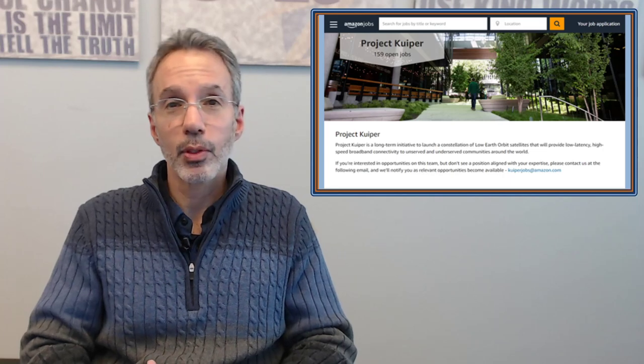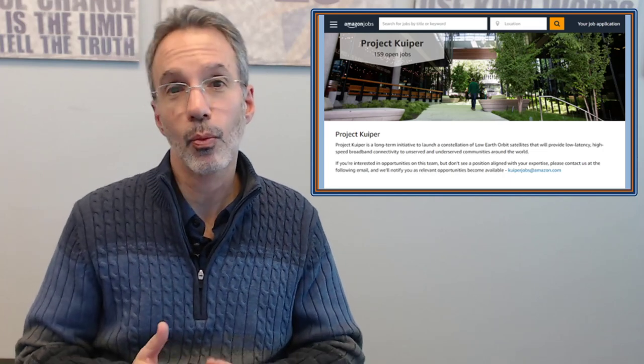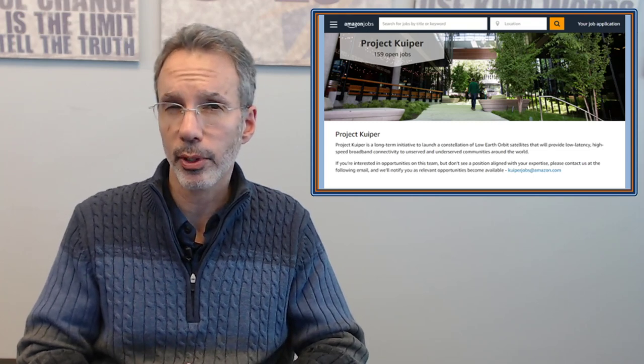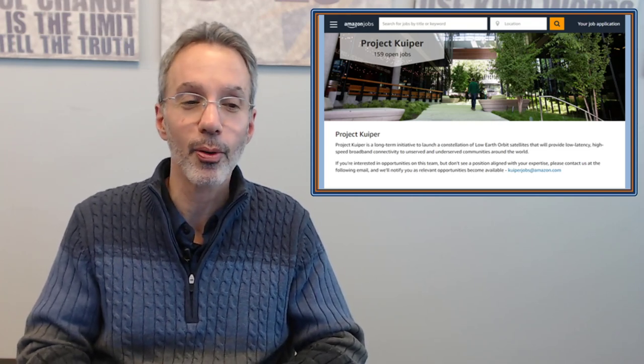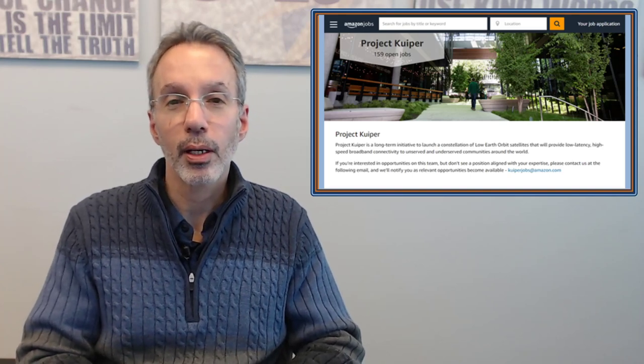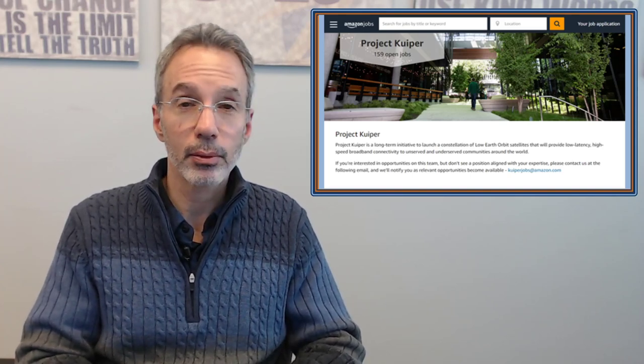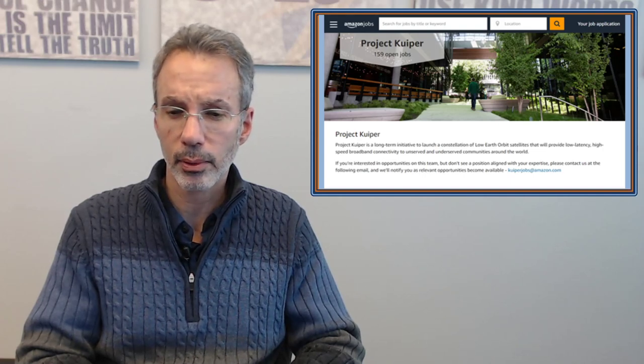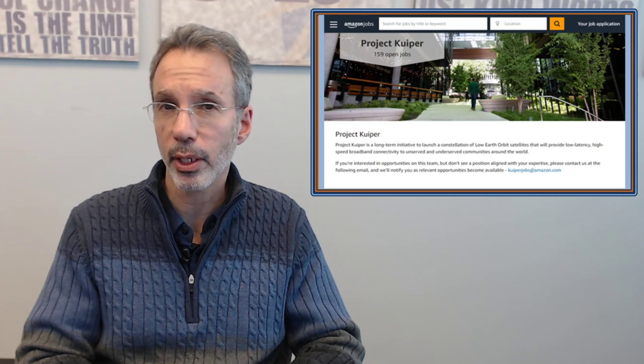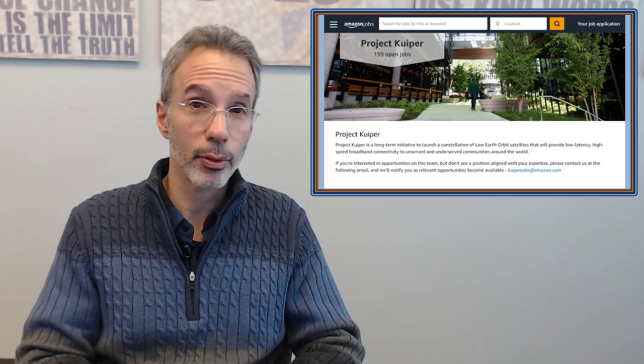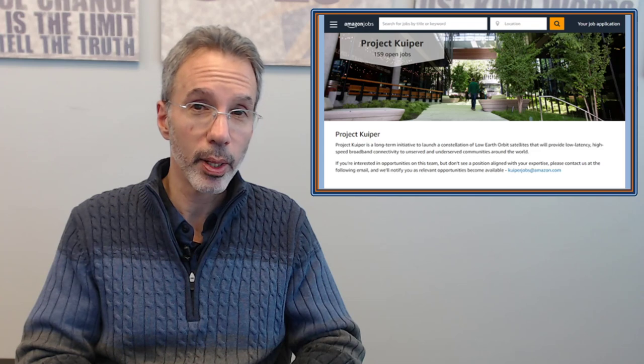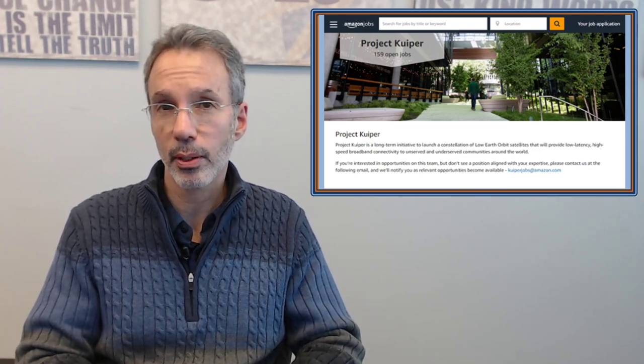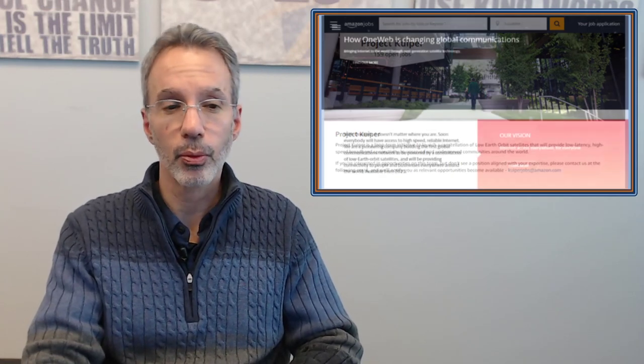So obviously SpaceX is at the forefront of this. There are other companies that are doing this, including Amazon. Amazon always wants to get involved in everything, it seems like, and they're involved in this. So they have their Project Kuiper, which they have been talking about. Not launched yet, but they're still moving forward. They just set up a permanent R&D headquarters to be able to create these satellites, so they're at that point. So again, they're quite a bit behind SpaceX, but they do have their R&D headquarters set up and they say they're eventually going to have 3,200 satellites in orbit.